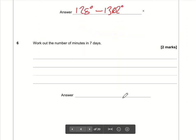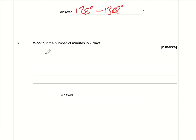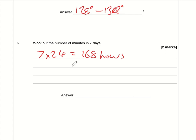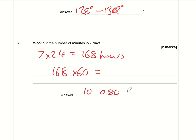Question six: work out the number of minutes in seven days. First, how many hours are in seven days? There are 24 hours in a day, so 7 times 24 is 168 hours. There are 60 minutes in an hour, so 168 times 60 equals 10,080 minutes.